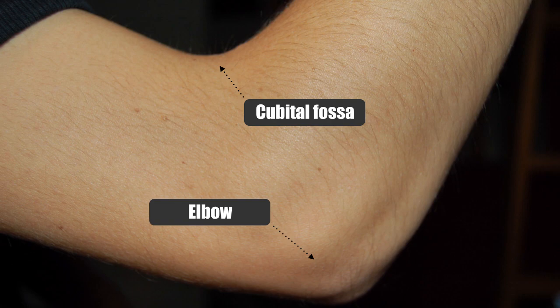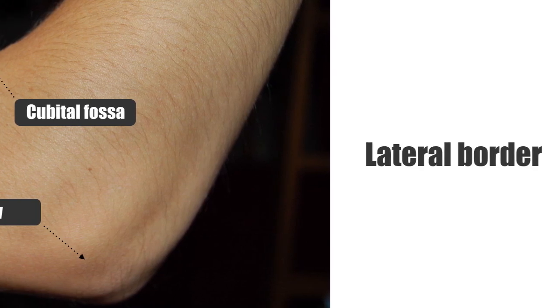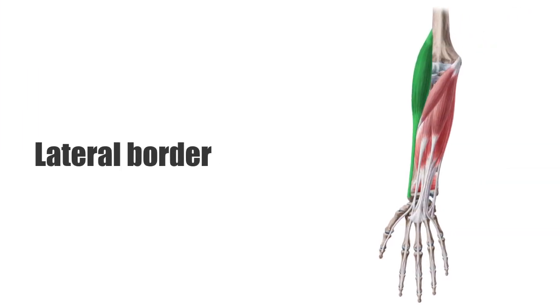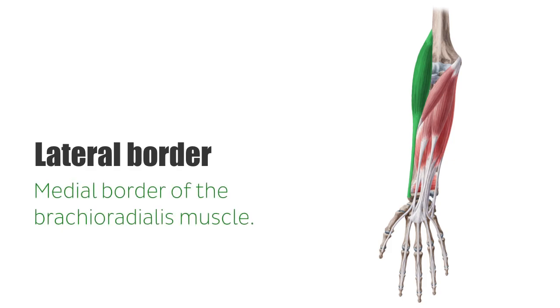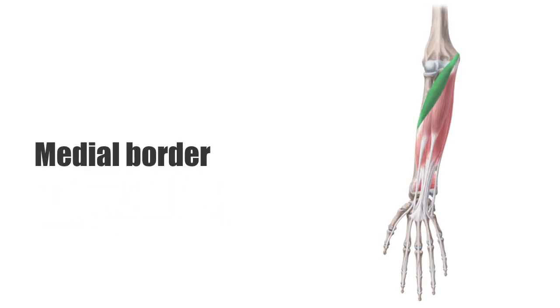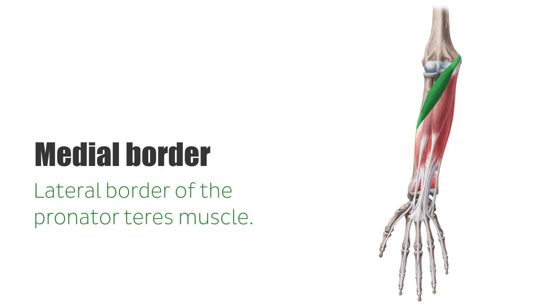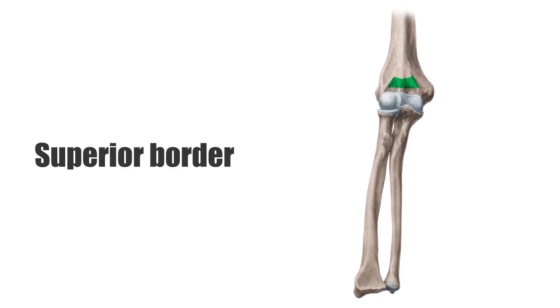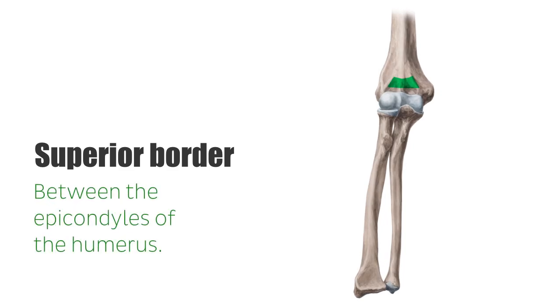It is triangular in shape and has three borders. The lateral border is the medial border of the brachioradialis muscle. The medial border is the lateral border of the pronator teres muscle. And the superior border is between the epicondyles of the humerus.